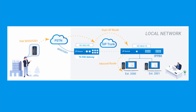Then you can make a test call to one of the connected FXO port numbers. For example, the FXO port number is 505525301 — you can dial this number on your mobile phone. The call will then be routed to the Yeastar P-Series PBX extension 2000.